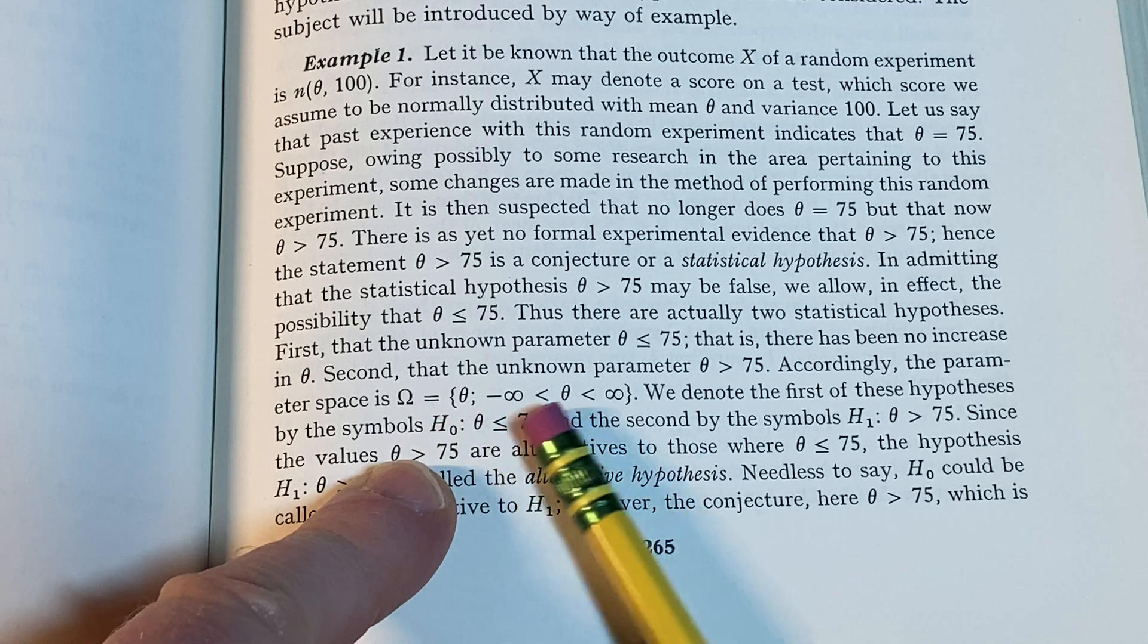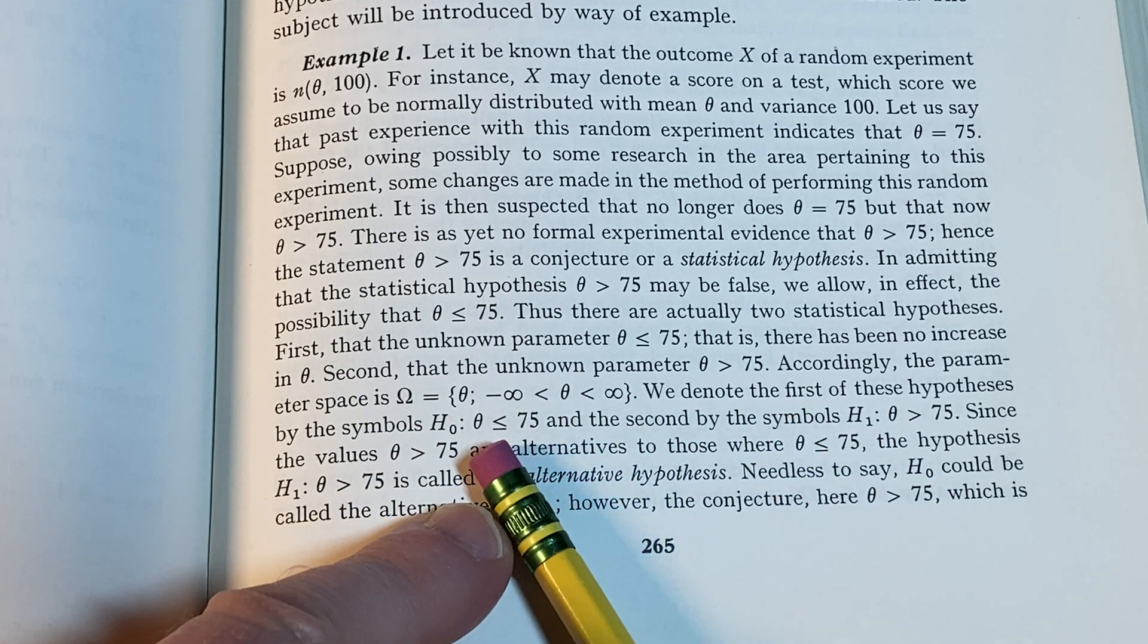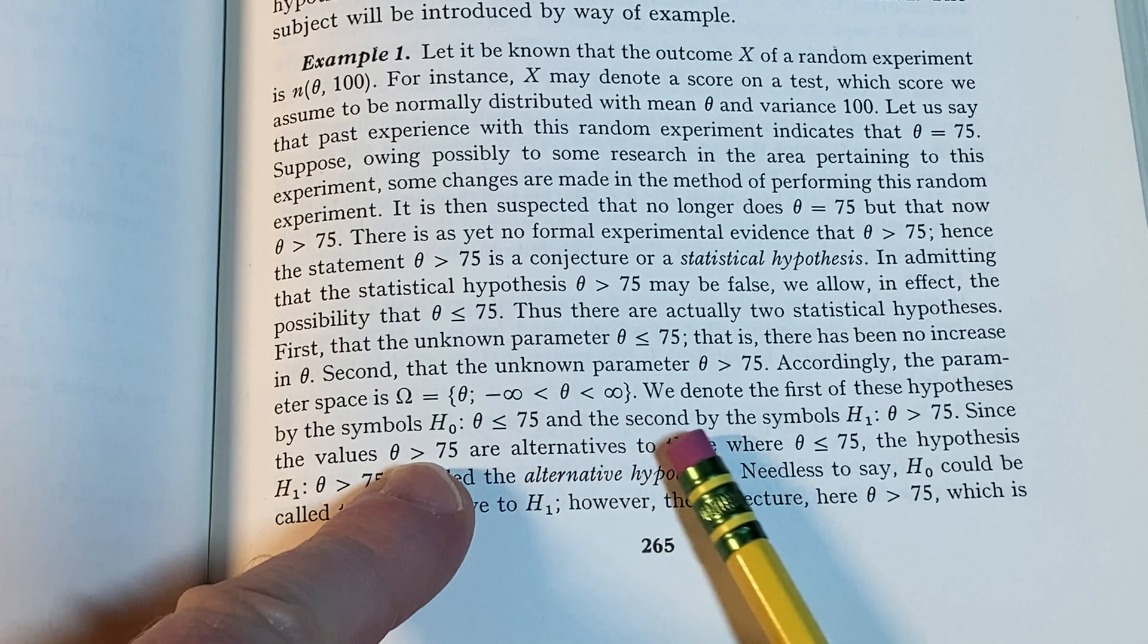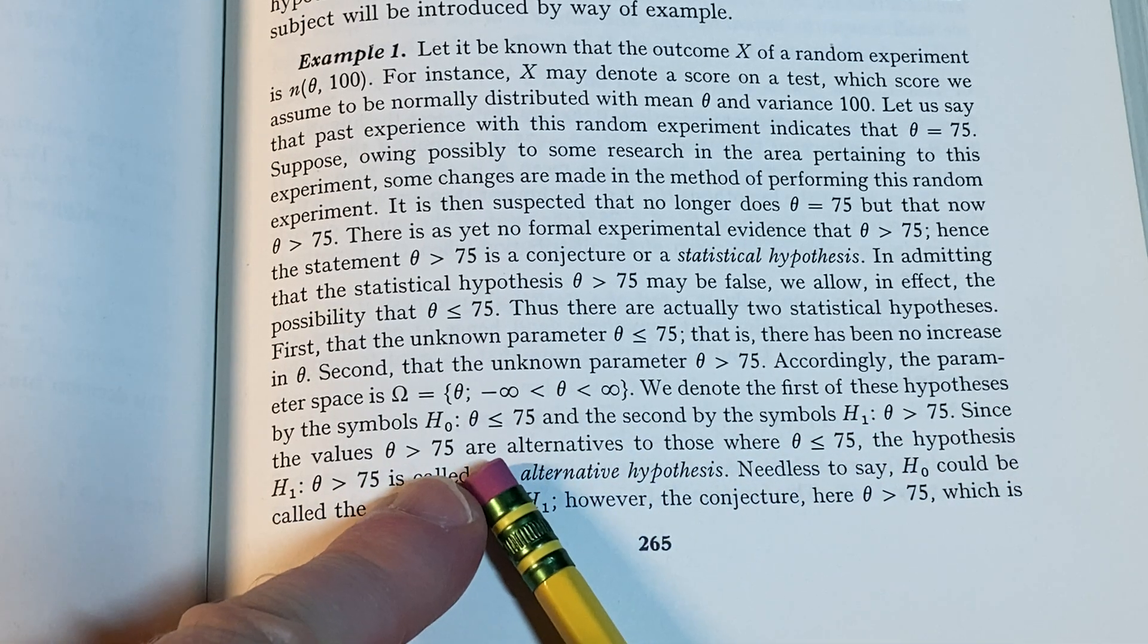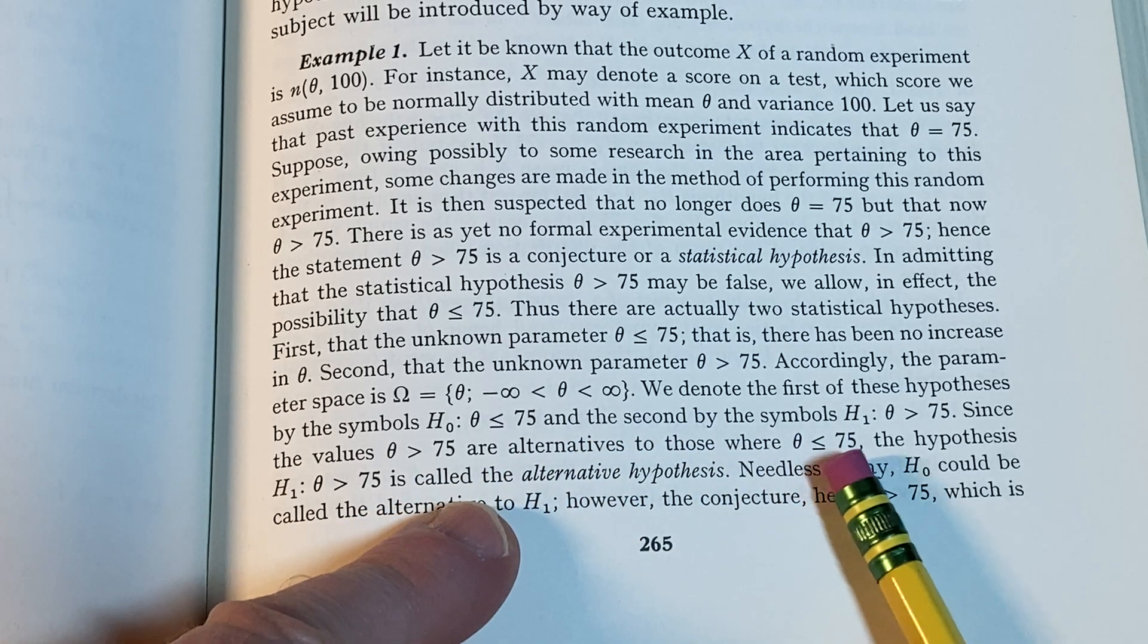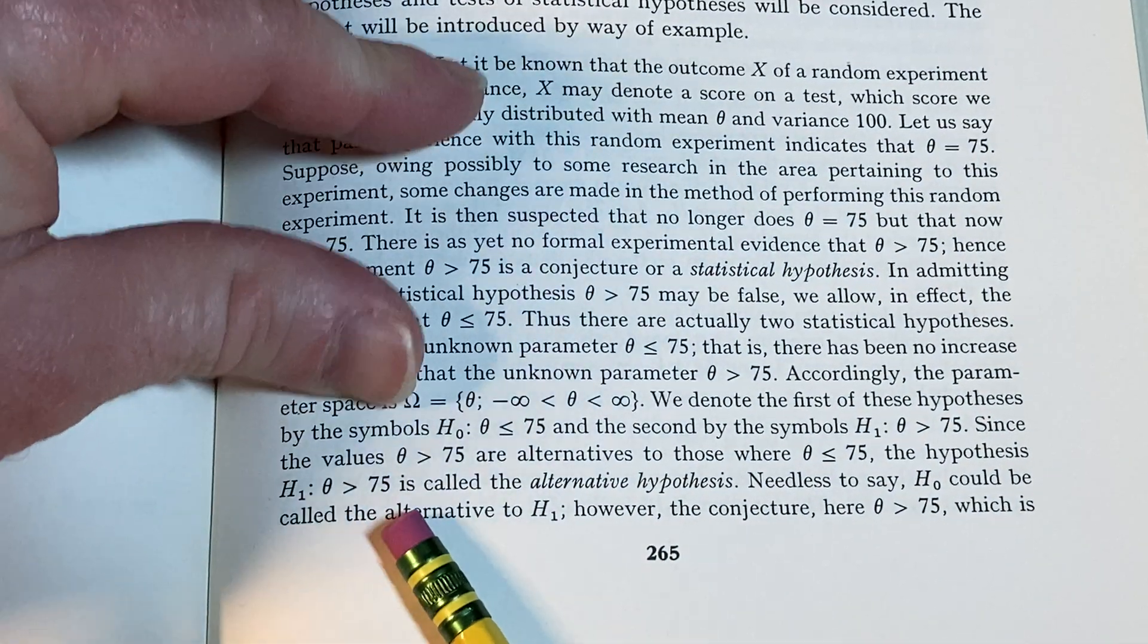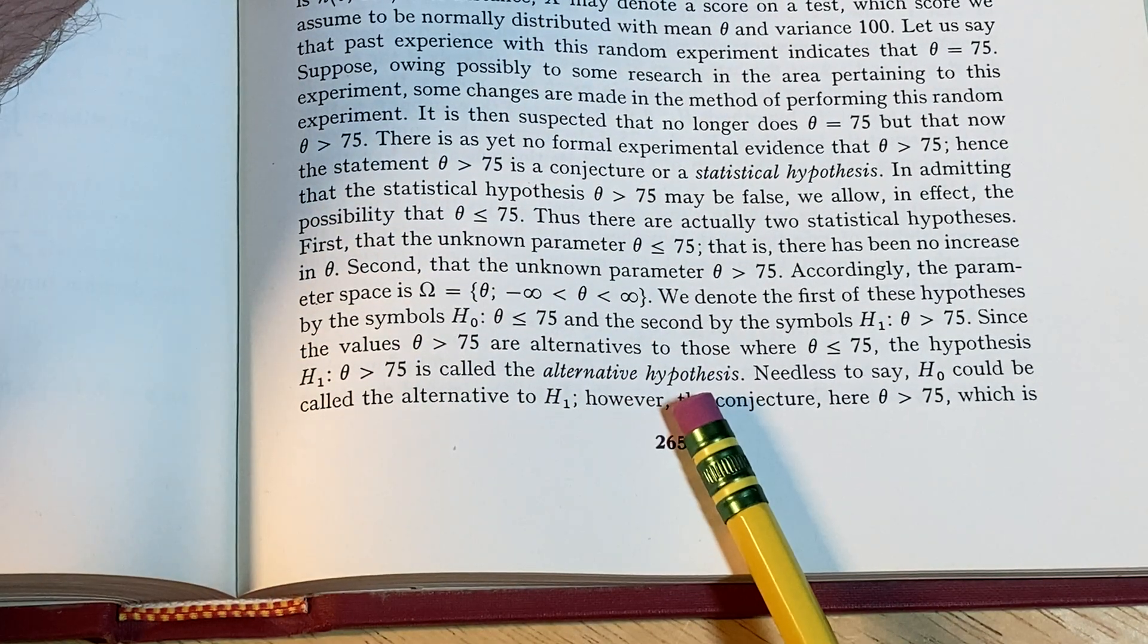Accordingly, the parameter space is Ω. Here, θ can be any real number. We denote the first of these hypotheses by the symbol H₀ and the second by the symbol H₁. Since the values θ > 75 are alternatives to those where θ ≤ 75, the hypothesis θ > 75 is called the alternative hypothesis.